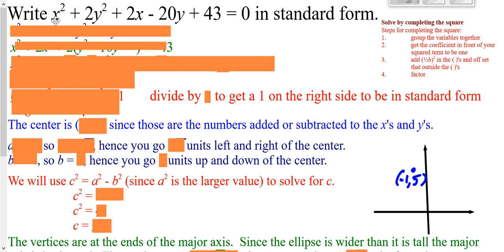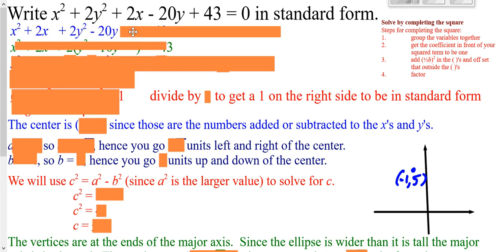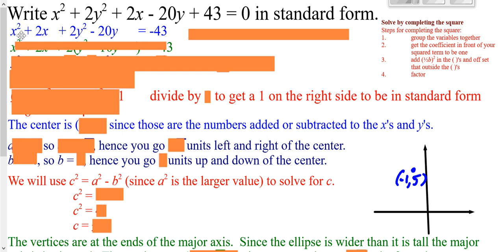Now let's go from the general form of an ellipse to the standard form, which makes it easy to find the center, how far you're going each way, and so on. We need to complete the square with the x's and the y's. Group the x's together and group the y's together, and take the constant number to the other side. In completing the square, you want a 1·x² term. We have that for the x's, but not for the y's, so I'm going to factor a 2 out of the y terms.